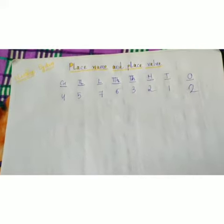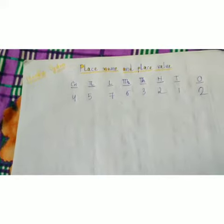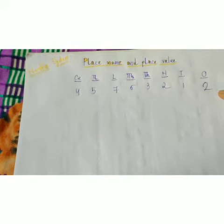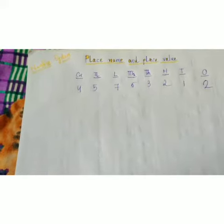So, let's start with one example. You can put any number in any place. I have put this number in this place. So, the first place name you have already known is ones.